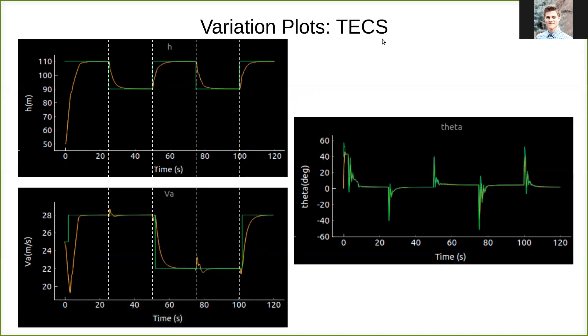And you can see that the results of the TECS controllers are slower, a little bit slower, but not too bad, convergence to H, and a significant drop or reduction in the spike size on your airspeed. And you can see that using oscillations in theta, it's able to better manage the transition between airspeed and your altitude energies.